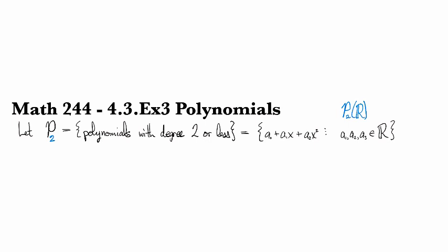Okay, so let's see. So first off, is 0 in there? Well, if I take a0 and a1 and a2 to be equal to 0, then I get the 0 polynomial. So 0 is definitely in there.